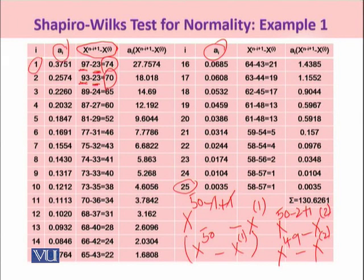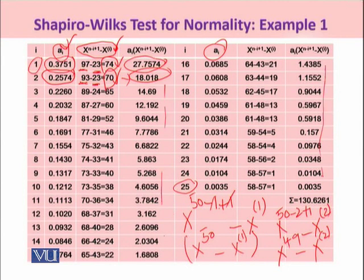Once you have completed this column using this formulae of taking the difference between the two ordered values, the next thing you need to do to calculate W is multiply the second column of coefficients with the corresponding difference between the two ordered statistics. Yani ki students, apko 0.3751 ko multiply karna hai with its corresponding difference between the two order statistics, which gives you 27.7574. Similarly, 0.2574 multiplied by 70 provides 18.018. And so on, you would be completing this column till the 25th observation. Finally, you will sum up this column. By summing up this column, you have got the value 130.6261.